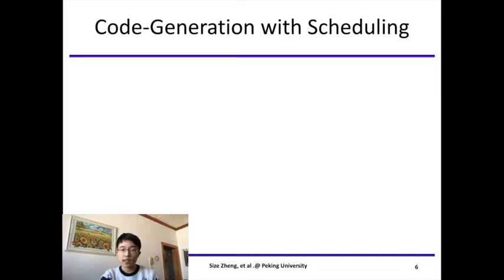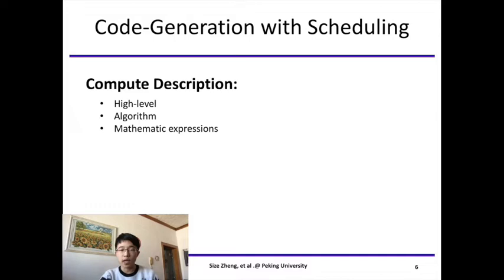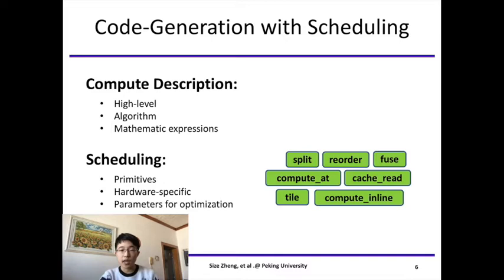In recent years, there has been a growing interest in leveraging high-level abstraction to describe tensor algorithms and employing tensor compilers to generate low-level implementations automatically. The compute description is a high-level description of our algorithm, which is actually a mathematical expression. The scheduling is about how to optimize the program. It is written in primitives with parameters. On the right of the slide are some primitives. They have different semantics and different parameter settings. For example, the split primitive is used for loop partition, and it requires split factors as parameters. The reorder primitive is used for loop reordering, and it requires a new order as parameters.